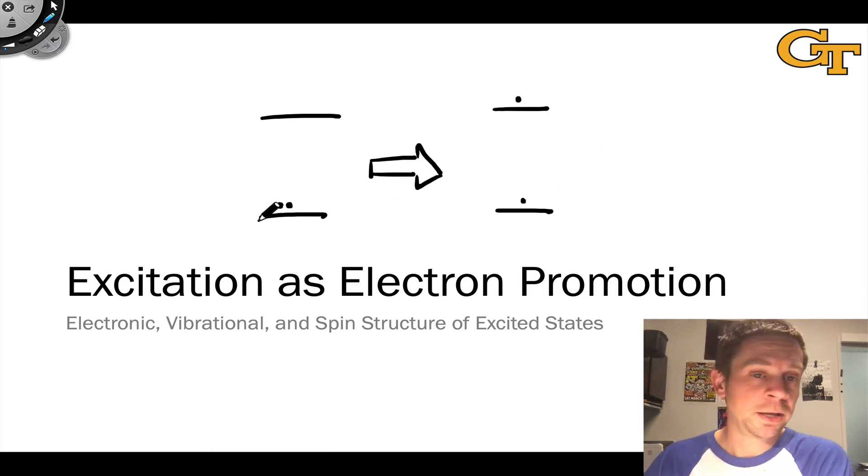For example, if we know that the HOMO of a particular chromophore in a molecule is an n-type orbital and the LUMO is a π*-type orbital, then we can talk about the n-π* excited state, which comes from the promotion of an electron from the n-orbital (the HOMO) to the π* orbital (the LUMO).